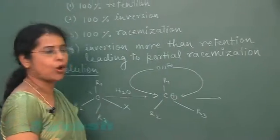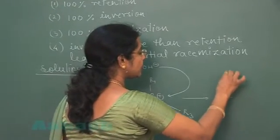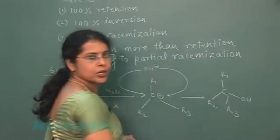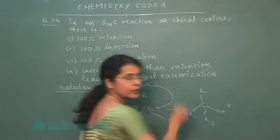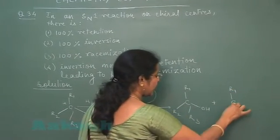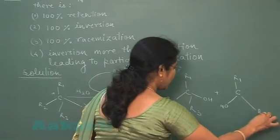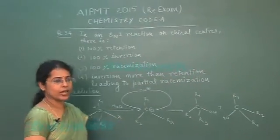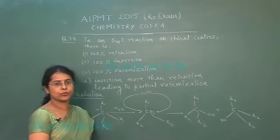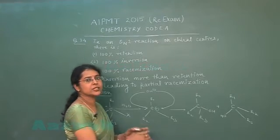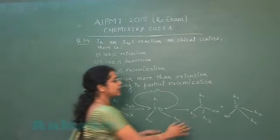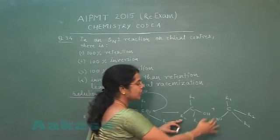Now attack may take place from the front side or attack may take place from the back side which will result in the formation of two optically active alcohols. R1, R2, R3 OH. So alkyl halide is converted into alcohol. From front side attack, this alcohol is obtained. Then from back side attack, this alcohol will be obtained. So such type of reaction takes place by retention of configuration, by inversion of configuration. But the product is partial racemic mixture. It means 100 percent racemization is not taking place and inverted product is more than the retention product.